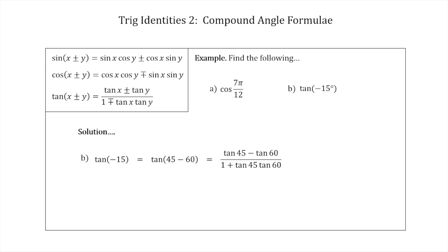Using the tan compound angle formula with x = 45° and y = 60°, we get: (tan 45° − tan 60°) / (1 + tan 45° × tan 60°). From our exact triangles, tan 45° = 1 and tan 60° = √3, giving us (1 − √3) / (1 + 1 × √3) = (1 − √3) / (1 + √3).